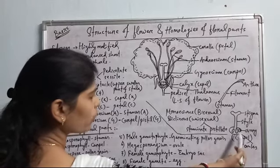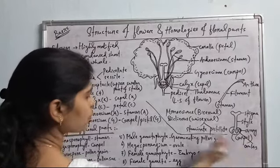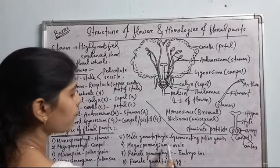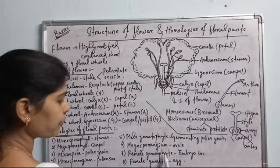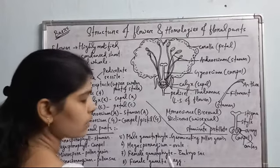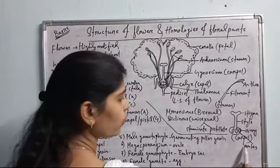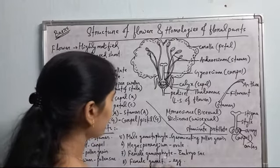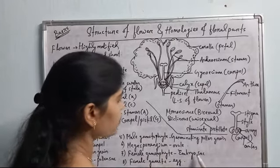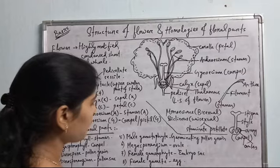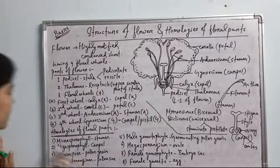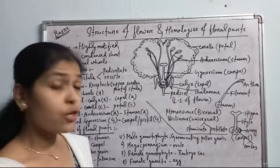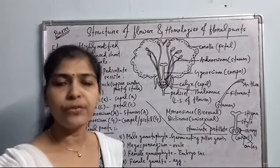The ovule is present inside the ovary, and inside the ovule the egg — the female gamete — is present. So the ovule is called the megasporangium, or the female gamete-carrying sac. The female gametophyte is the embryo sac, which is present inside the ovule and contains the egg. The female gamete is the egg. These are all the homologies of different floral parts.